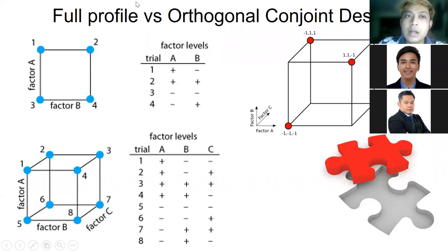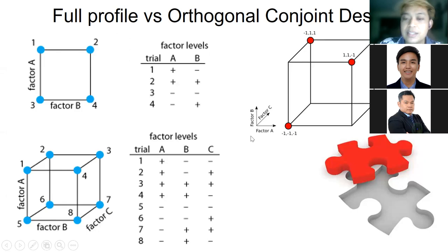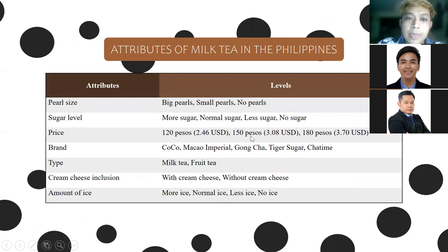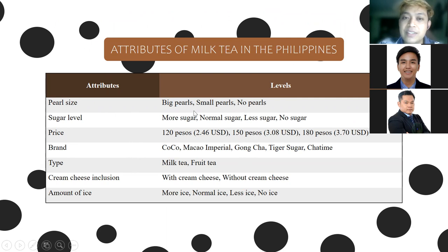Let me explain the full profile versus orthogonal design. In full profile conjoint, for the milk tea example — with attributes having 3, 4, 3, 5, 2, 2, 4 levels respectively — the total number of stimuli would be 3×4×3×5×2×2×4, which gives you over 2,800 combinations. Would your respondents answer 2,800 questions for one survey? They would run away.